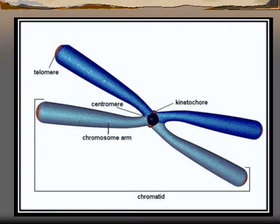In this diagram, you can see that there are two chromatid sisters, both connected to each other with the help of a centromere. The arms of the chromosome are called chromosome arms. The centromere connects the two chromatid sisters.